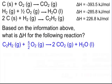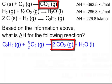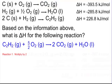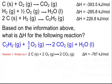Zero in on each reaction. Looking at the first reaction and comparing it to the target in blue: the carbon dioxide appears in both. In the first reaction there is one mole of carbon dioxide, but in the target reaction there are two moles. So I want to multiply reaction one by two — giving two carbons, two oxygen gases, and two carbon dioxides. That also multiplies the delta H by two, which becomes negative 787 kilojoules per mole.